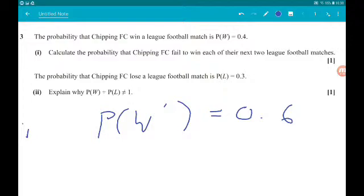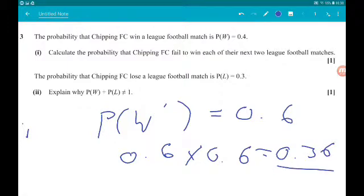Now, we want the probability of not winning two matches, or their next two matches. So that's 0.6 times 0.6, which is 0.36. Cool.